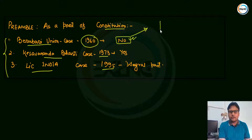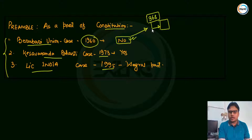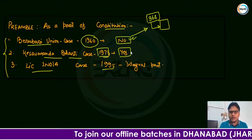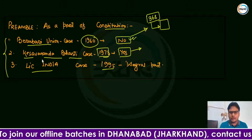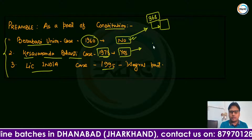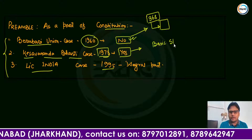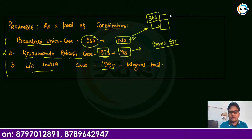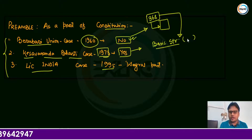Not being a part of the Constitution meant that under Article 368 — the constitutional power of amendment of Parliament — the provisions of the Constitution could be amended. However, in the Kesavananda Bharati case of 1973, it was declared that yes, the Preamble is indeed a part of the Constitution. At the same time, the doctrine of basic structure was given: those foundational values and fundamental features cannot be amended under Article 368.